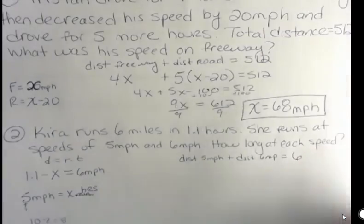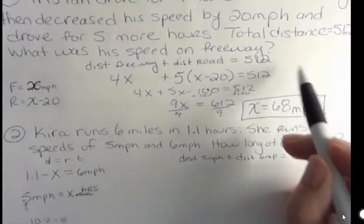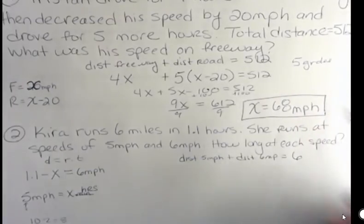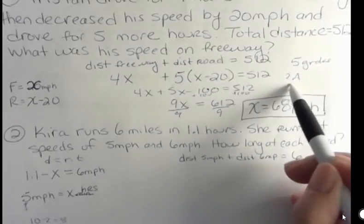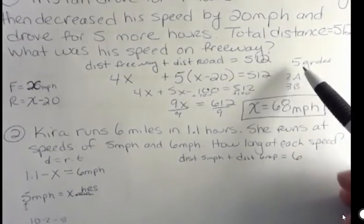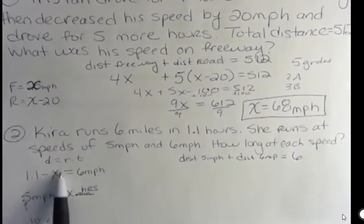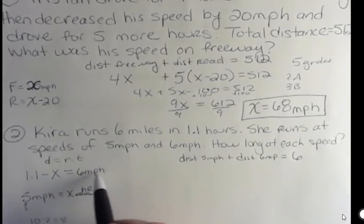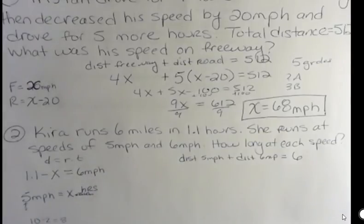If I told you I got some A's and some B's, and I had five grades, and then I told you I had two A's, you would automatically say, oh, then you had three B's, because you would take the two that you know, and you would subtract it from the total, and that's what we're doing here. We're taking the X that we know, we don't really know it but we're calling it X, and we're subtracting it from the total, and saying what's left is going to be the time, hours at 6 miles per hour.